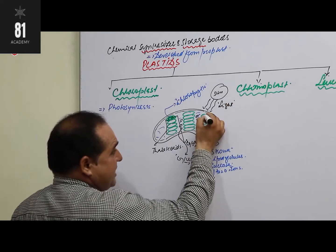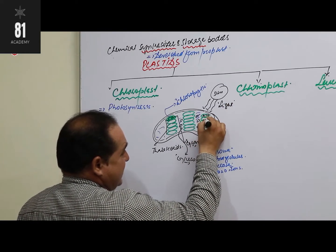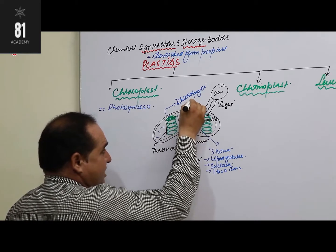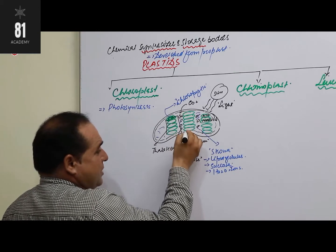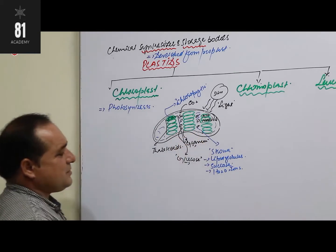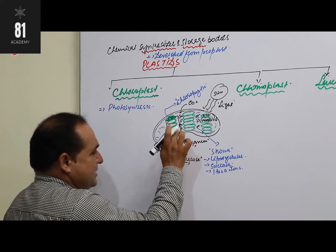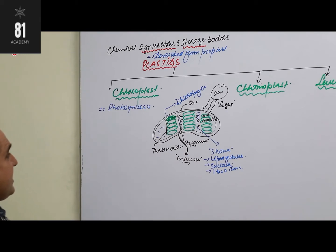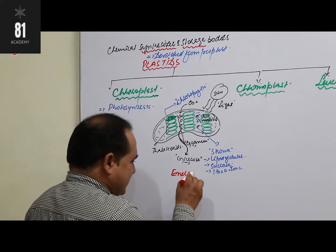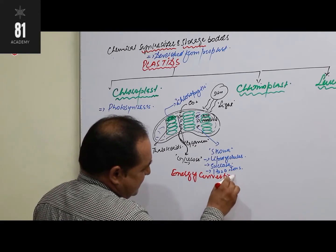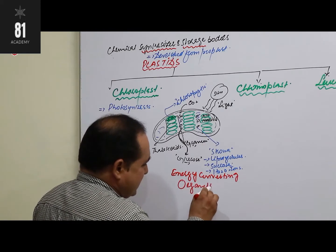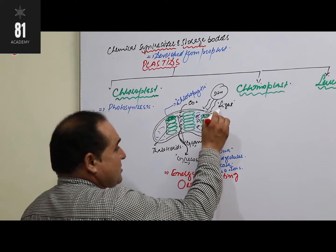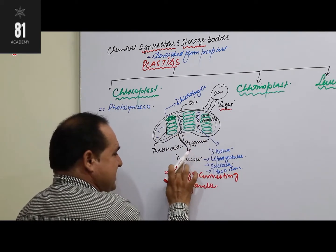Light energy is captured and ATP and NADPH are produced. These molecules then fix carbon dioxide from the environment and convert it into glucose. This process is called photosynthesis. That is why chloroplast is also called an energy-converting organelle — because it converts light energy into chemical energy in the form of glucose.